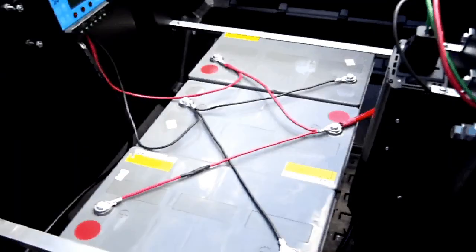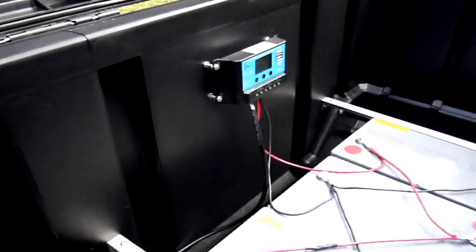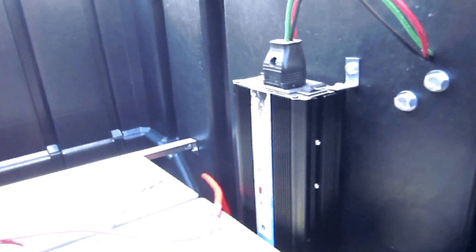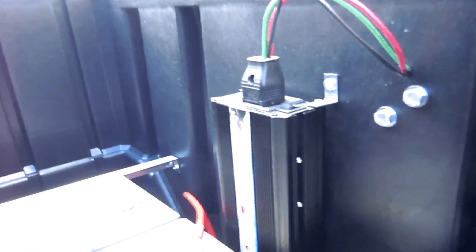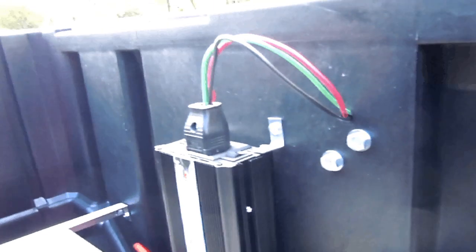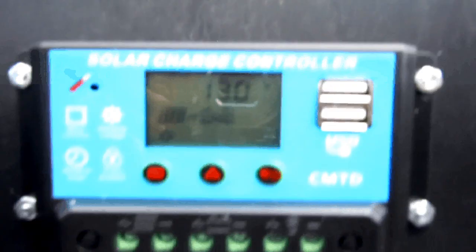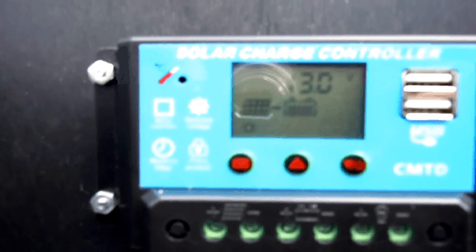The batteries in turn as they're being charged by the charge controller power this 2000 watt power inverter that converts your DC direct current into AC 110 volts. Also notice that we have a USB port that can charge USB devices, and we have also two USB ports directly on the charge controller.